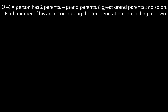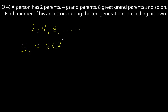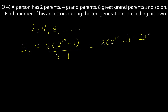Let us look at this one. A person has 2 parents, 4 grandparents, 8 great-grandparents and so on. Find the number of ancestors during the 10 generations preceding his own. In the first generation we have 2, then 4, 8 and so on. We need the sum of 10 terms of this GP. Using the formula S_n = a(r to the power n minus 1)/(r minus 1), with a = 2 and r = 2: S_10 = 2 times (2 to the power 10 minus 1) = 2046. Hence the number of ancestors is 2046.